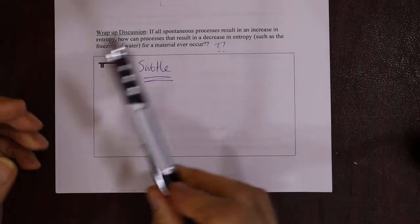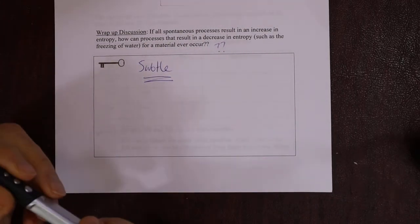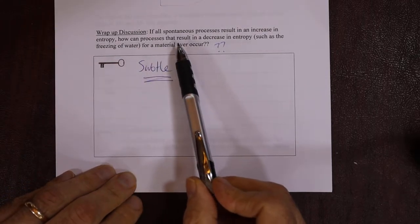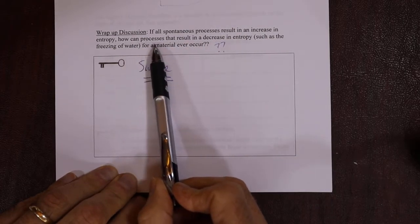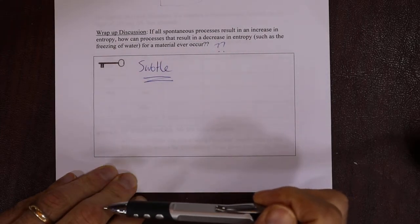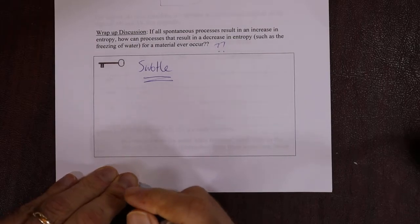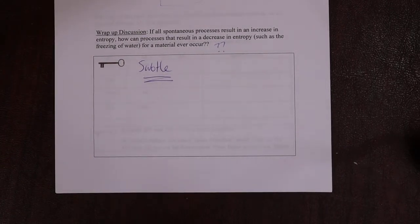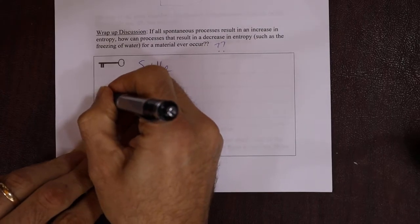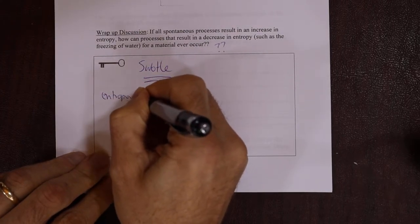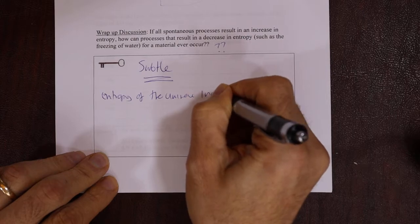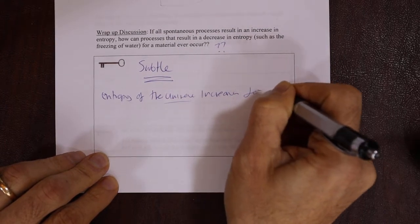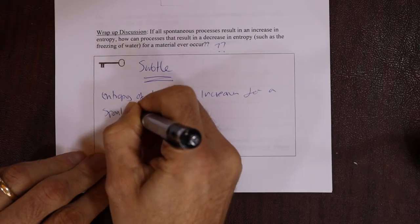So then how can I make an ice cube? I'm making water from something that's more disordered to something that's less disordered. How can I condense gas to make a solar system? It's very disordered as a gas, it condenses, it becomes more ordered. That makes no sense because the second law says things have to become more disordered over time. Bottom line is, it's a very subtle point. So if all spontaneous processes result in an increase in entropy, how can processes that result in a decrease in entropy, such as the freezing of water or the formation of a solar system, ever occur? Doesn't that prove God exists? Well, no.